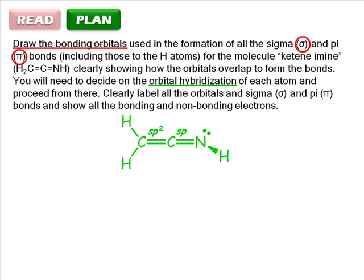Finally, the nitrogen atom has three electron domains, a lone pair, a single bond, and a double bond, so like the first carbon, it's sp2 hybridized.